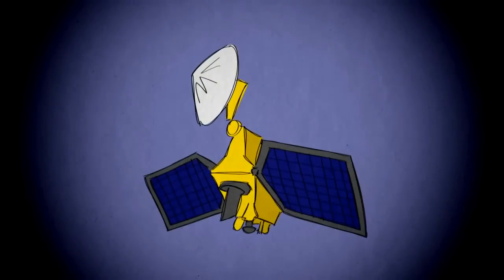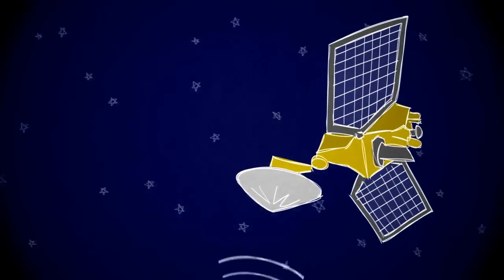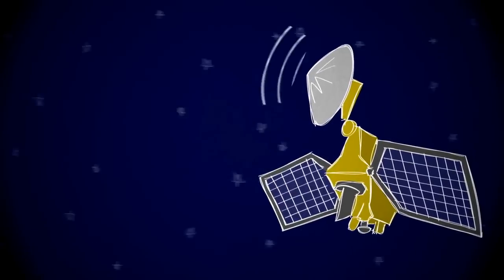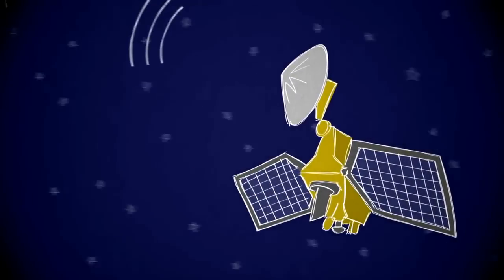So the Mars Reconnaissance orbiter plays the role of backup. It will also fly overhead to capture what happens and then store the landing data it collects on board for playback to Earth a few hours later.